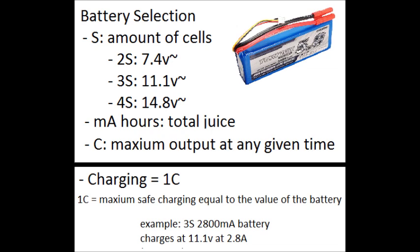The milliamp hours is the fuel tank of your battery. The more milliamps, the longer your battery can perform and give power to your quadcopter. The C on a battery represents the maximum output it can give. The higher the C, the more amps can be drawn at any single time. Generally, about 30C is very sufficient.